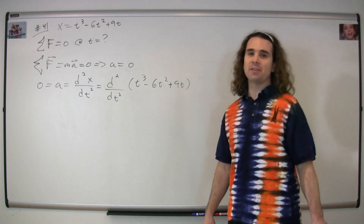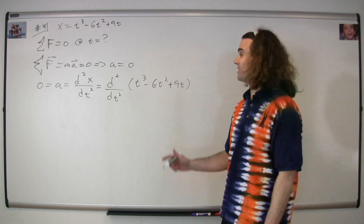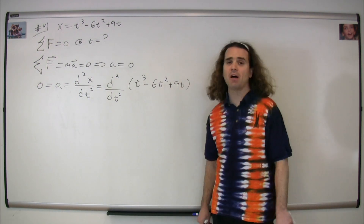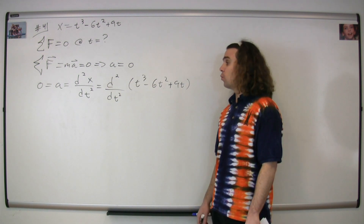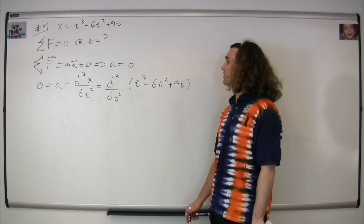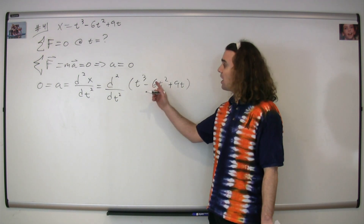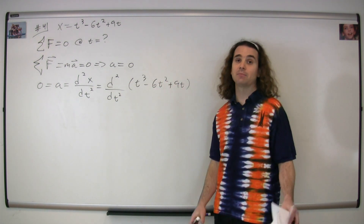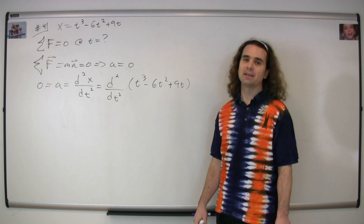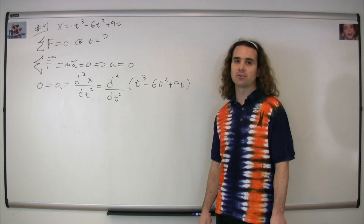We know that acceleration equals the second derivative of position with respect to time. Therefore we just take the derivative of our function with respect to time twice, and then set that equal to zero.